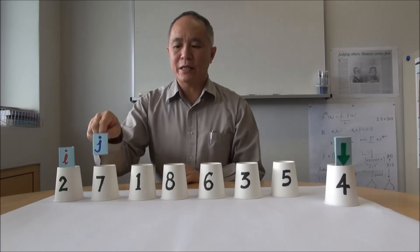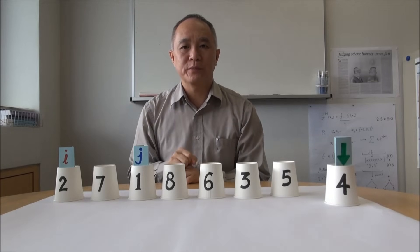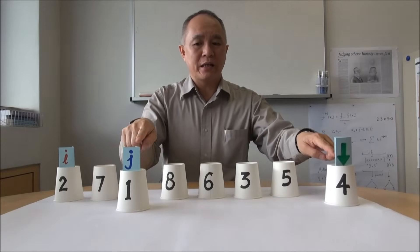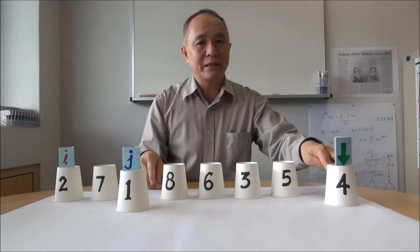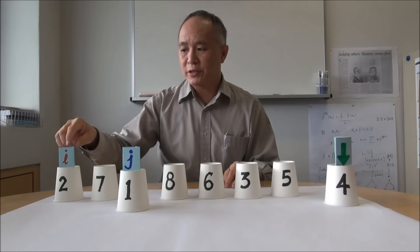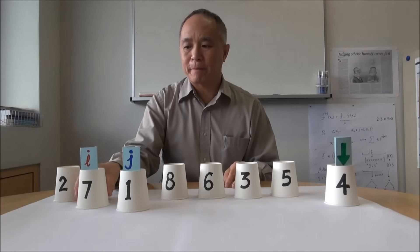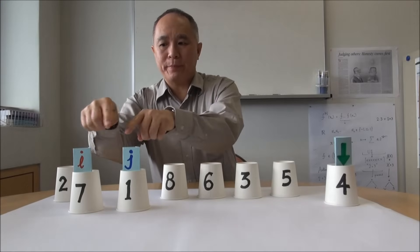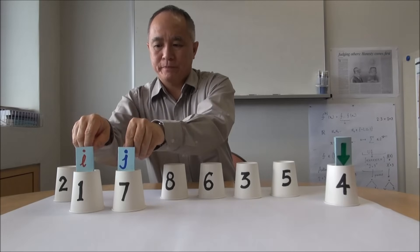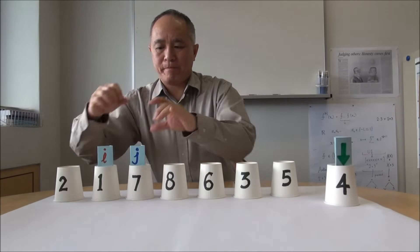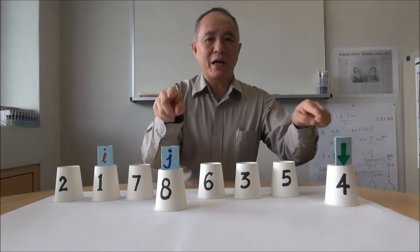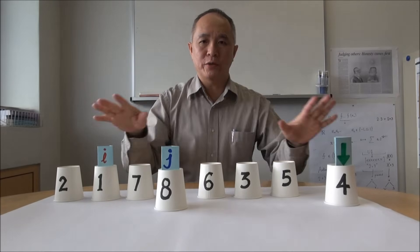Then we move on to the next element and make a comparison again. If this jth element is smaller than the pivot, we perform the same operation — we increment i and then we do a swap. We put it back, j goes on, and we make a comparison. Now if this element is larger than the pivot, we do nothing.